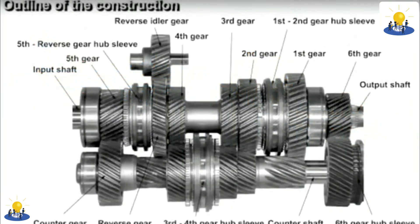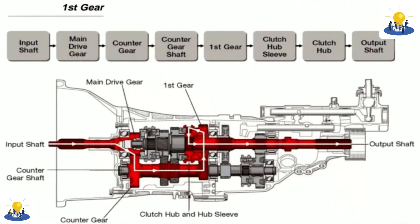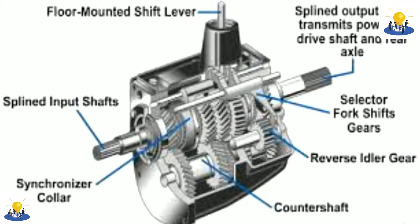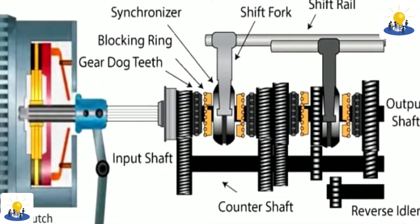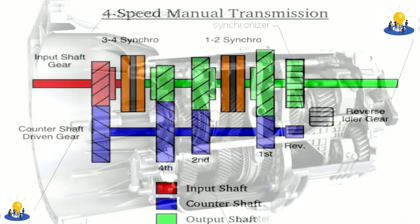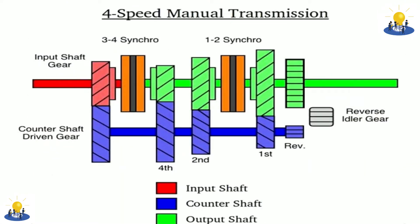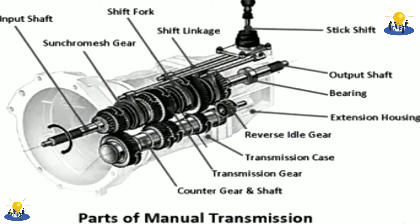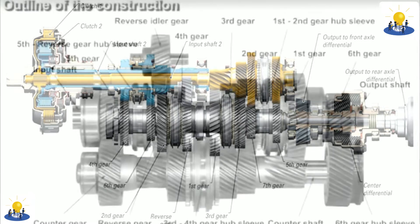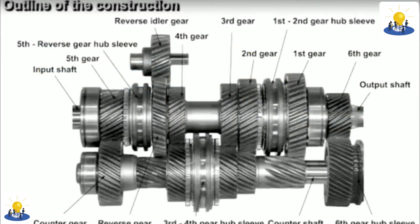This means that when the vehicle is stopped and idling in neutral with the clutch engaged and the input shaft spinning, the third, fourth, and fifth gear pairs do not rotate. When neutral is selected, none of the gears on the output shaft are locked to the shaft, allowing the input and output shafts to rotate independently. For reverse gear, an idler gear is used to reverse the direction in which the output shaft rotates. In many transmissions, the input and output shafts can be directly locked together by bypassing the countershaft to create a one-to-one gear ratio, which is referred to as direct drive.